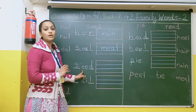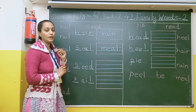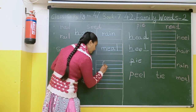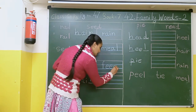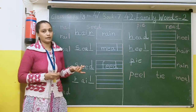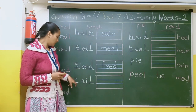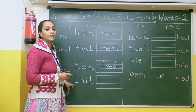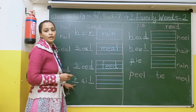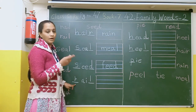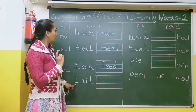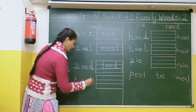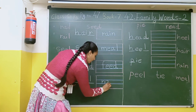After that, here there is an image of a seal in your book — seal ke liye hum likhenge uske saamne feed, F-E-E-D. Feed yaani khaana khilana. After that, here there is a rail — feed ke baad humne rail likha hai. Rail ke saath mein hum likhenge rain. Then nail likhenge — N-A-I-L.